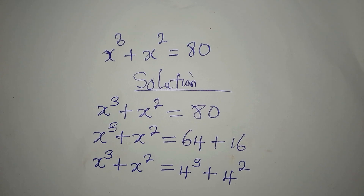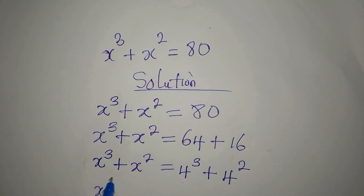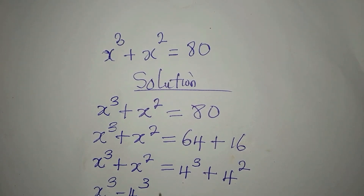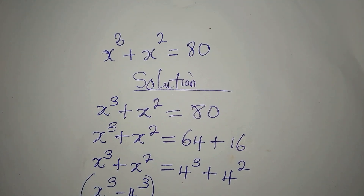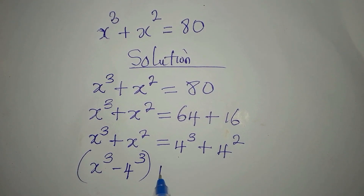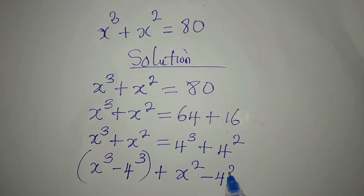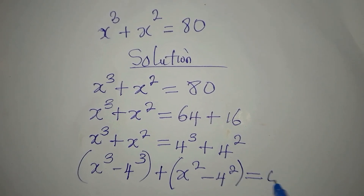The next thing is to regroup so that like terms are together. x to the power of 3 minus 4 to the power of 3 will be grouped together, then plus x squared minus 4 squared, and we equate this to zero.